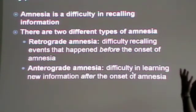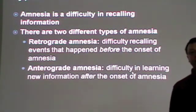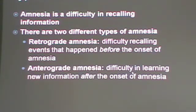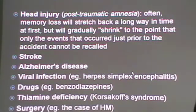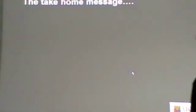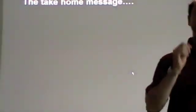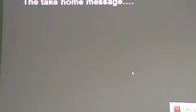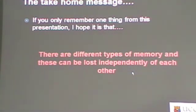But of course there is abnormal forgetting as well. Abnormal forgetting is a crude way of summarizing what we refer to more technically as amnesia, with various possible causes including head injury. So the take-home message — what was the take-home message? There are different types of memory. Fantastic. The take-home message that I was hoping was that...